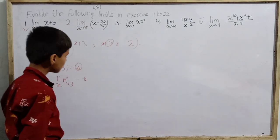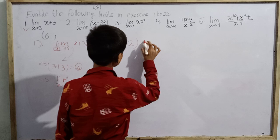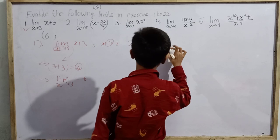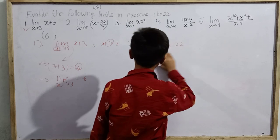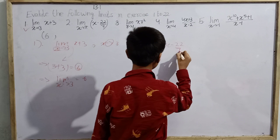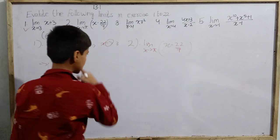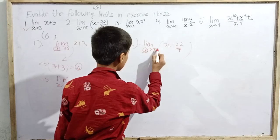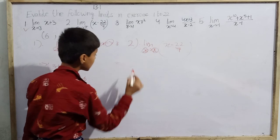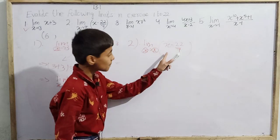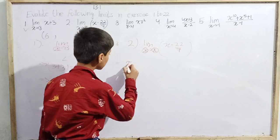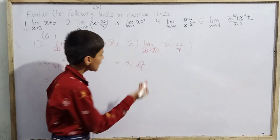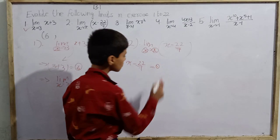Now the second question: limit x tends to π of (x − 22/7). As I told earlier, x tends to π means x's value is π. So we put x = π, giving π − 22/7.